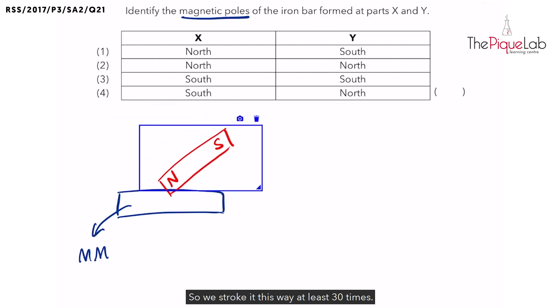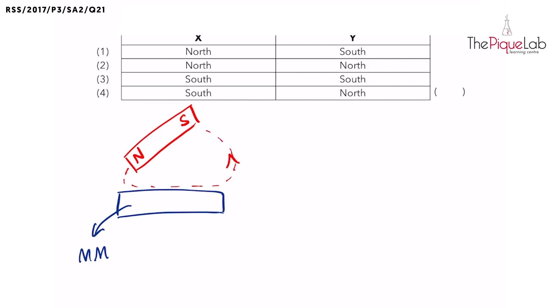So we stroke it this way at least 30 times. And let me draw in the arrows to show us the direction of our stroking. Now, the next thing we need to do is find out the poles of the magnet that we have created. So our new magnet would have two poles on this end. Let me name the ends A and B.